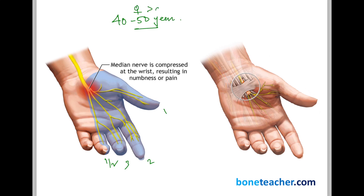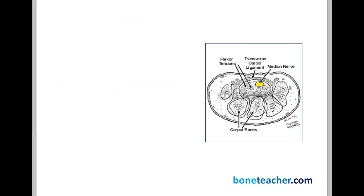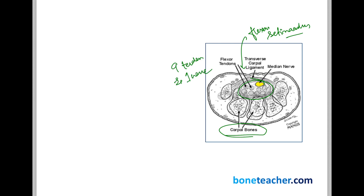The carpal tunnel is a tunnel between the carpal bones and the flexor retinaculum. This tunnel holds nine tendons and one nerve. In the normal carpal tunnel, there is barely room for all the tendons and the median nerve. If any pathology increases the pressure inside this already tight tunnel, it can cause compression of the median nerve, giving you carpal tunnel syndrome.